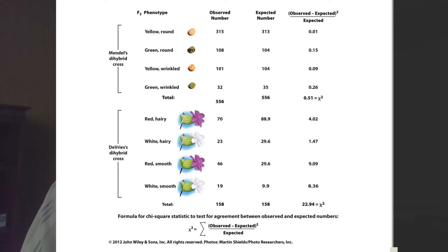Students have trouble with the expected number column. Where'd you get that? We know based on Mendelian expectations we're expecting a 9:3:3:1 ratio. If we have 556 observations total, 9/16ths will be yellow round. So 9/16ths of 556 is 313. The same thing: 3/16ths of 556 is 104, and 1/16th of 556 is 35. The expected number is easily derived by taking the fraction of the total number.